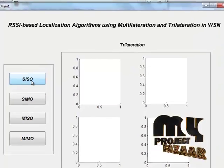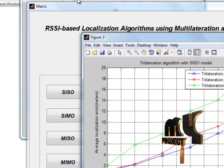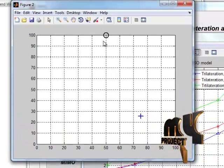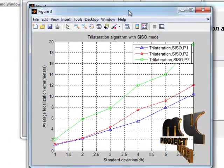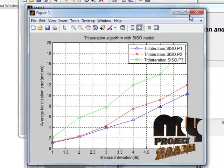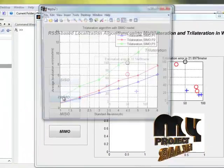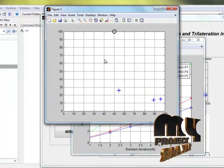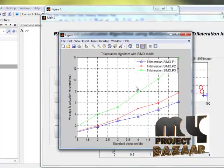Here again we are going to see for single input with single output. See single input, single output. This is the graph plotted for trilateration with SISO model. Next single input with multi output. This is the graph plotted for trilateration algorithm with SISO model.